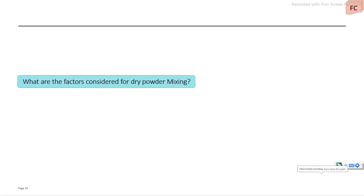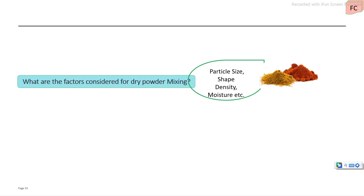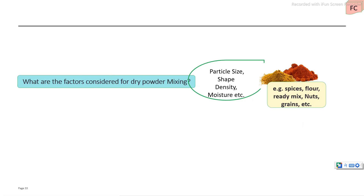Mixing of dry ingredients or the dry powders. Basically the preparation of the full product like the ready mix or the ready to cook product. Different types of products require dry ingredients to be properly mixed. Also some additives which are added in small quantities must be uniformly mixed in the final product, which is directly related to the quality of the final product.